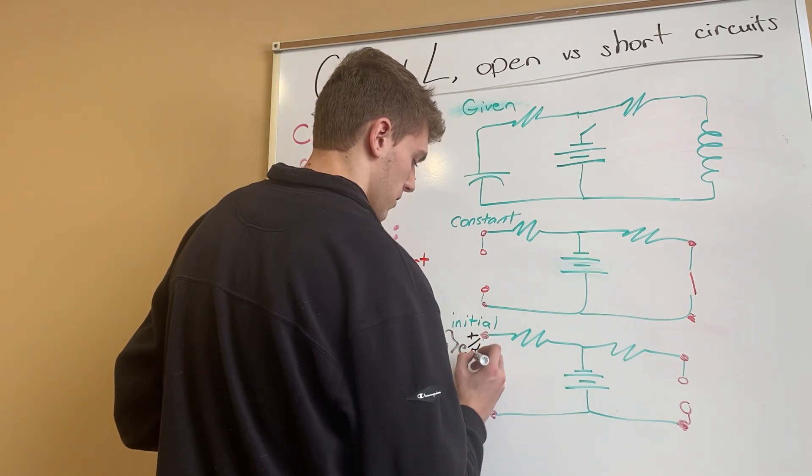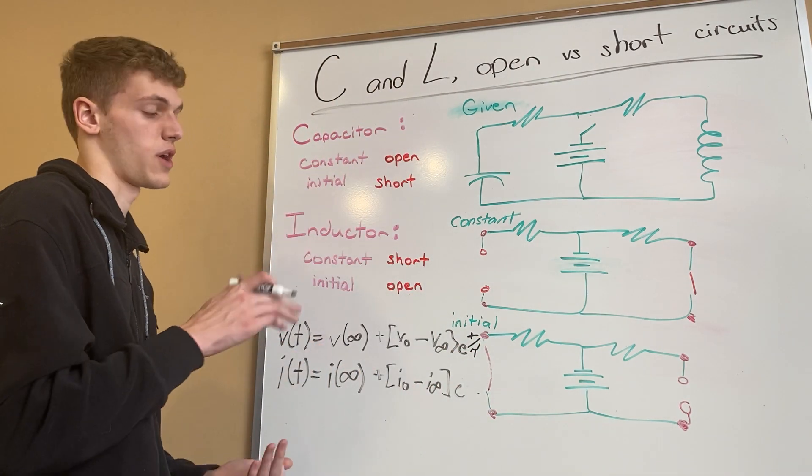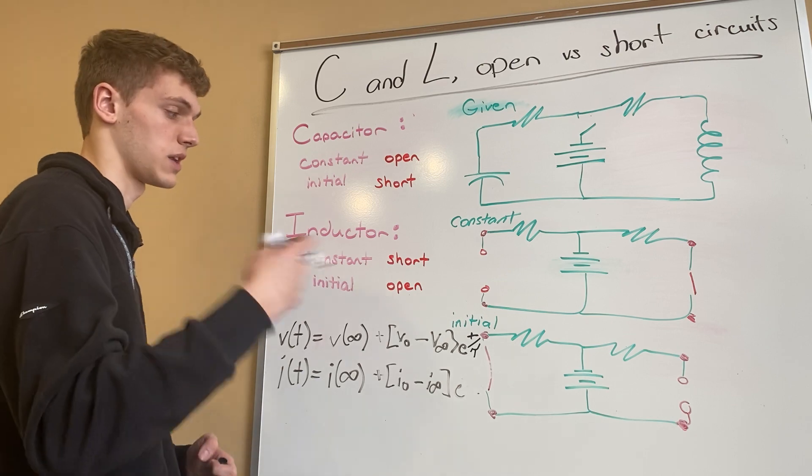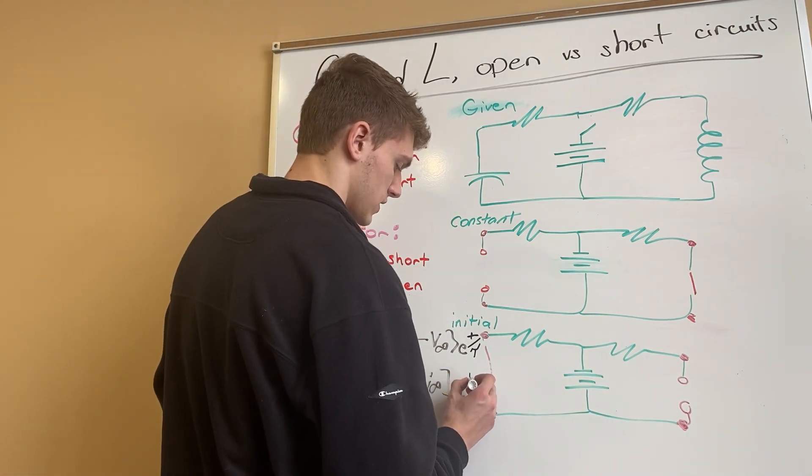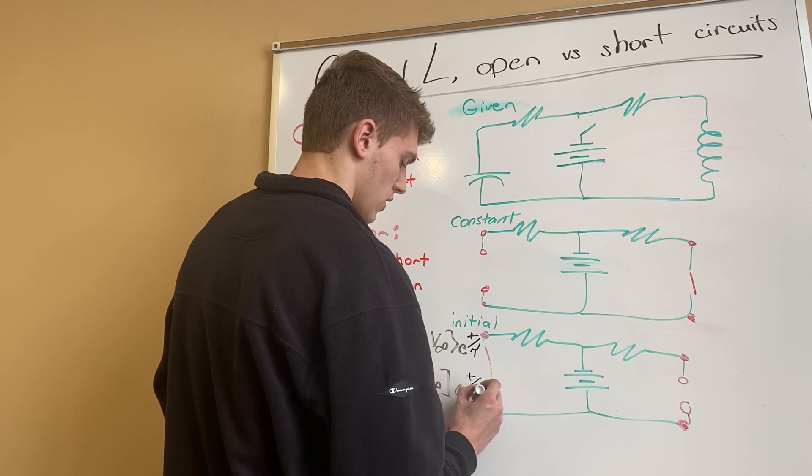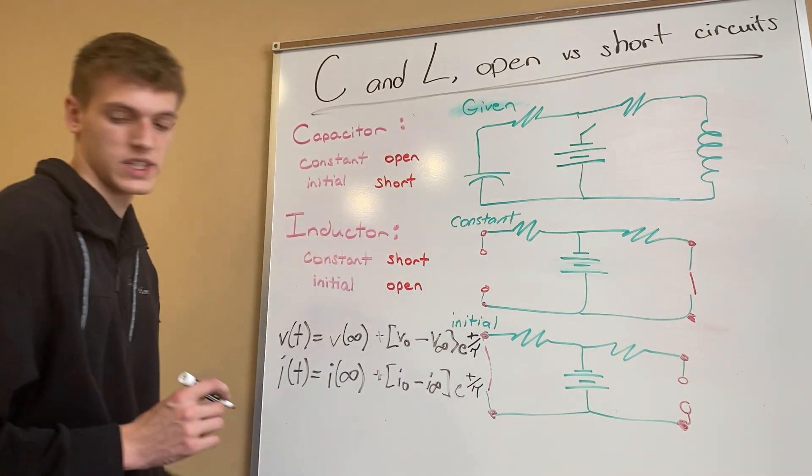And our bottom T is going to be our time constant that we found using our R Thevenin looking back at our other video, or in this case it's going to be T over our time constant once again looking at that, and these are both going to be negative.